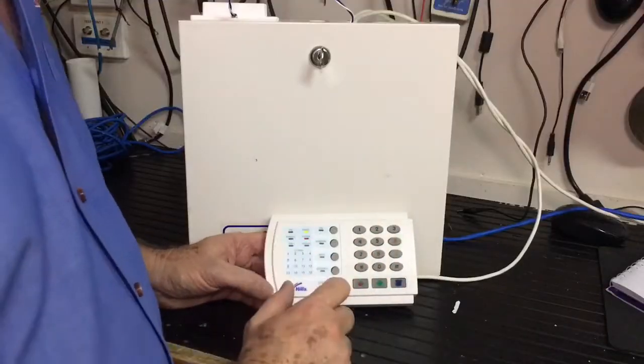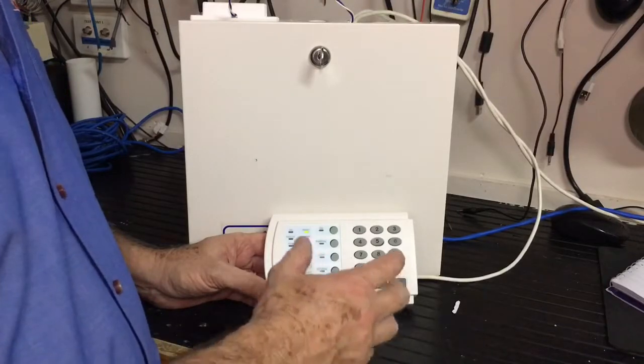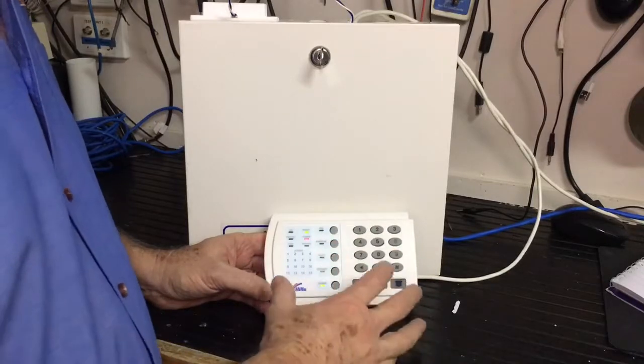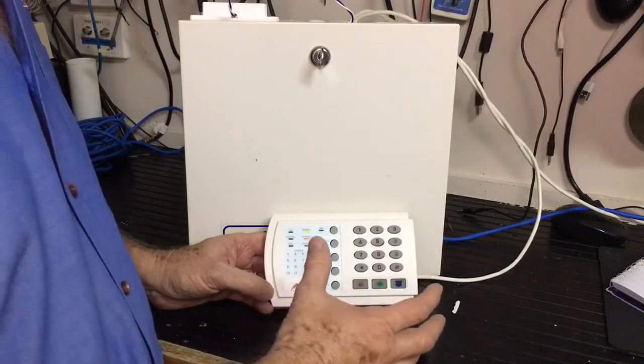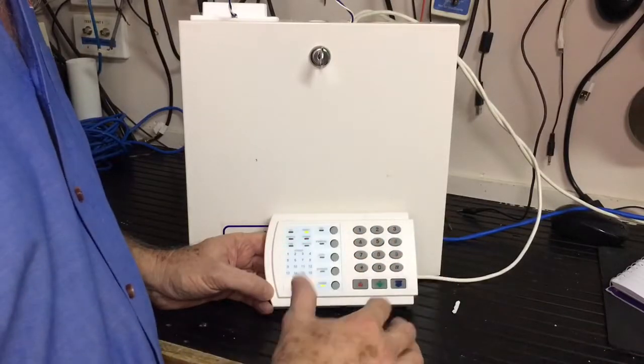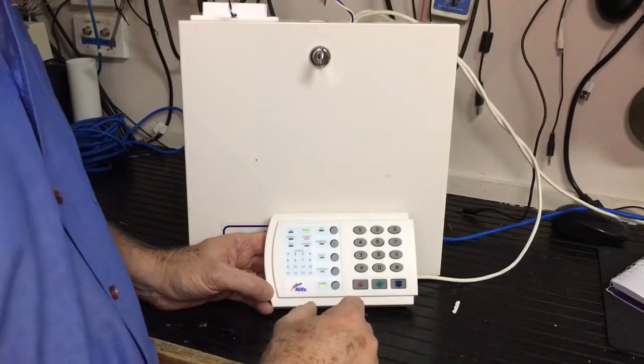We're ready to do our custom programming. The first 20 zone types on an NX or Reliance system are totally programmable. You can change the way they operate. So that's how we can actually make a custom zone. We're going to use zone type 19, which is not a very used type zone that's used very often. So we're going to modify that for our purpose for the gate alarm.